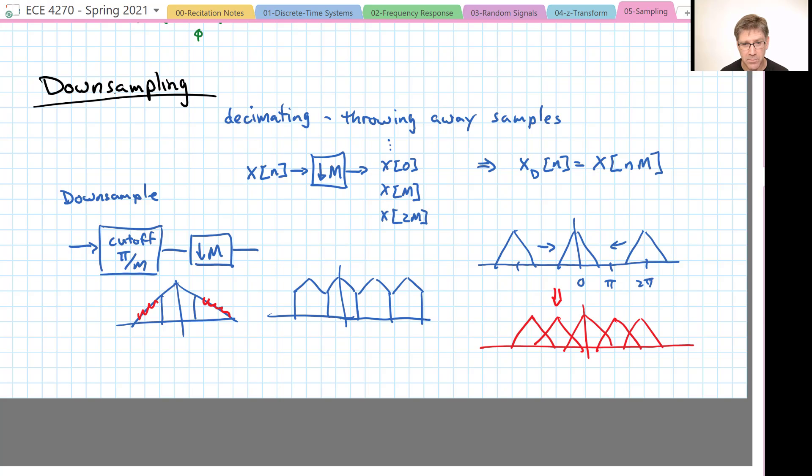You should note that what used to be pi over m after the down-sampling becomes pi. So that would be 3 pi, and at this point we'd have 2 pi, minus 3 pi, and so on.